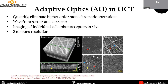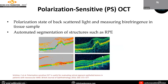Here we can see different images of the various layers of the retina. Polarization-sensitive OCT works on the polarization state of backscattered light and measures birefringence in tissue samples, enabling automated segmentation of structures such as the RPE. In one comparison, both methods detected atrophy similarly, but in another case, polarization-sensitive OCT was able to detect RPE atrophy area better than the conventional method.